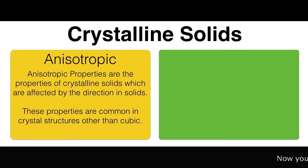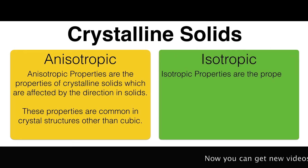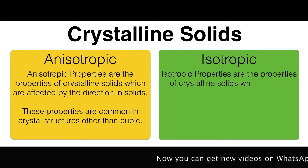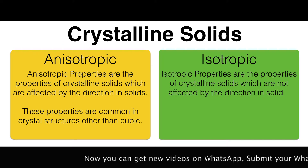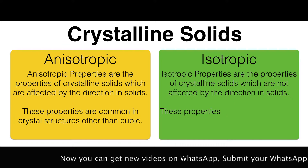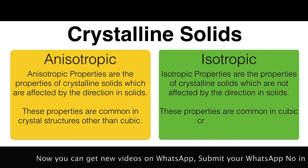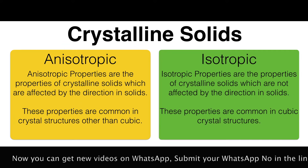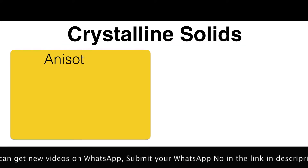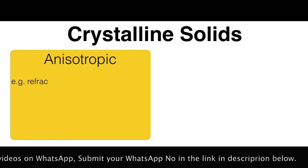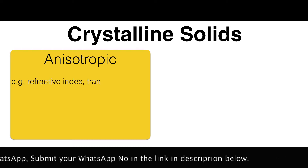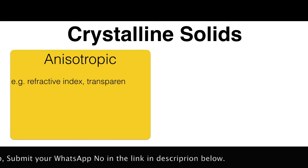Isotropic properties are the properties of crystalline solids which are not affected by the directions of the solid. These properties are common in cubic crystal structures — for example, refractive index, transparency, etc.